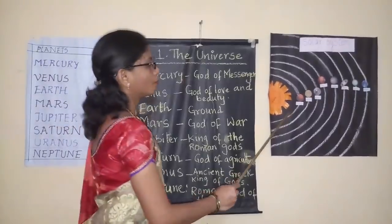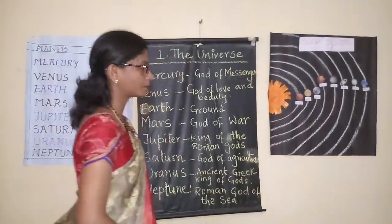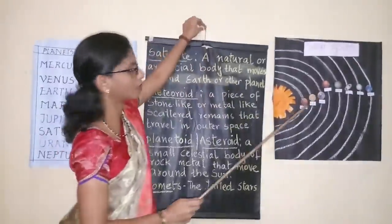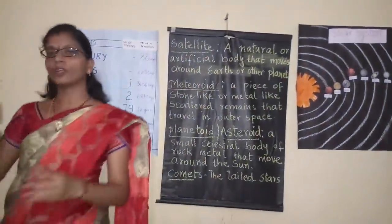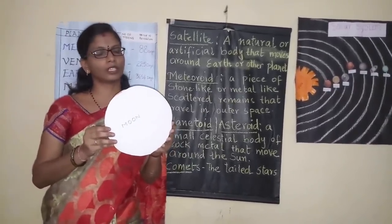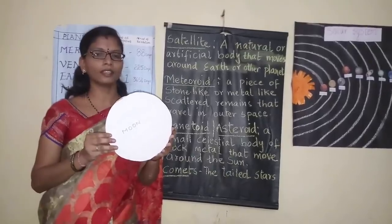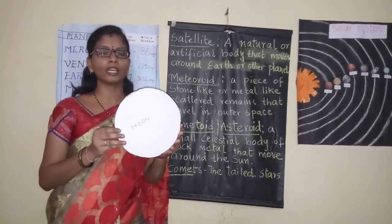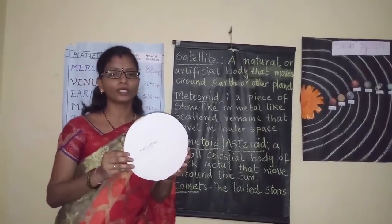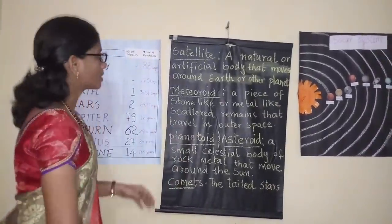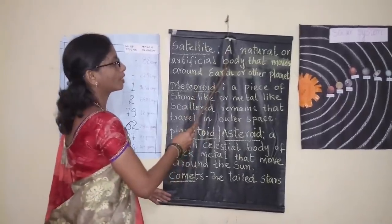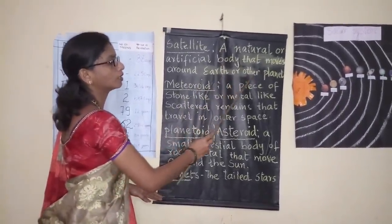Children, we have learnt these 8 planets. Now I would like to ask you about one thing — what is this? It is the moon. We see the moon in the sky during the night time. This moon is also known as a satellite. A satellite is a natural or artificial body that moves around the earth or other planets.